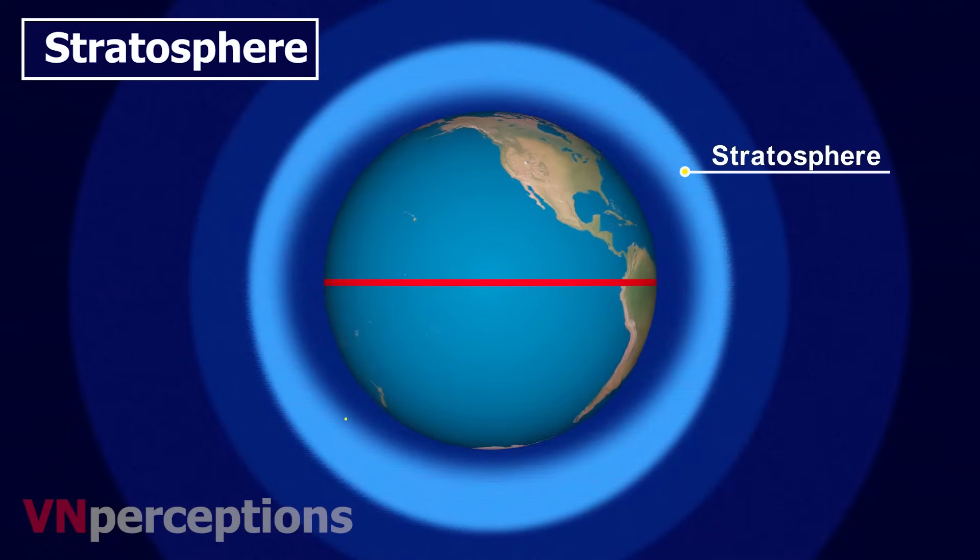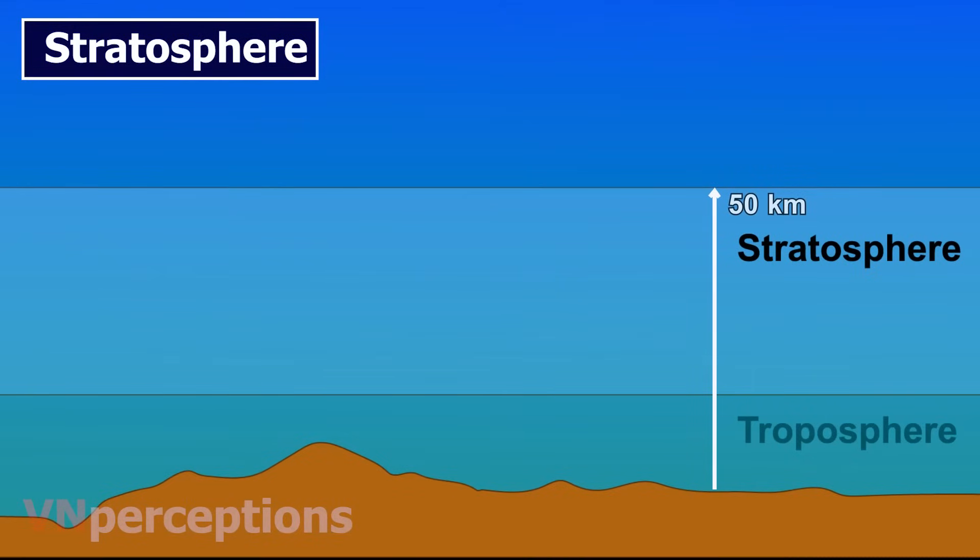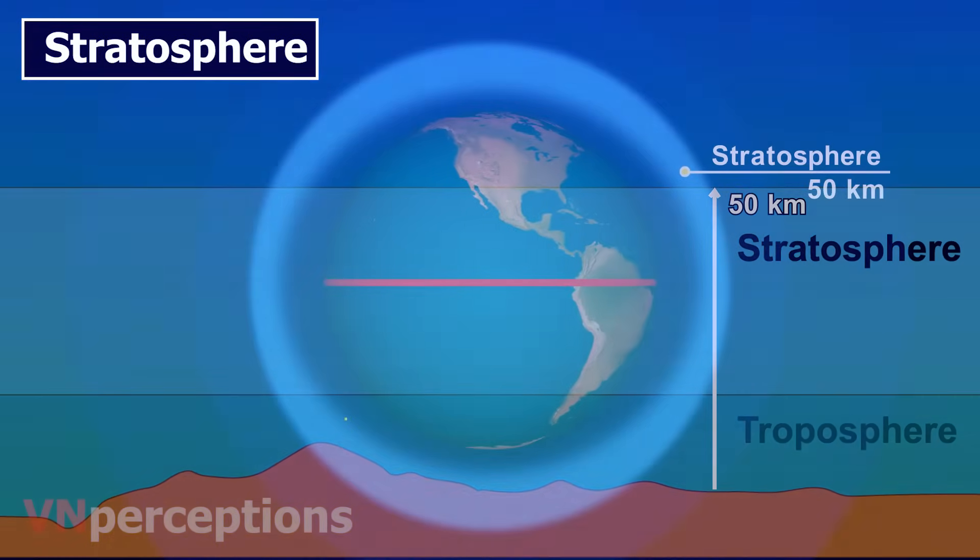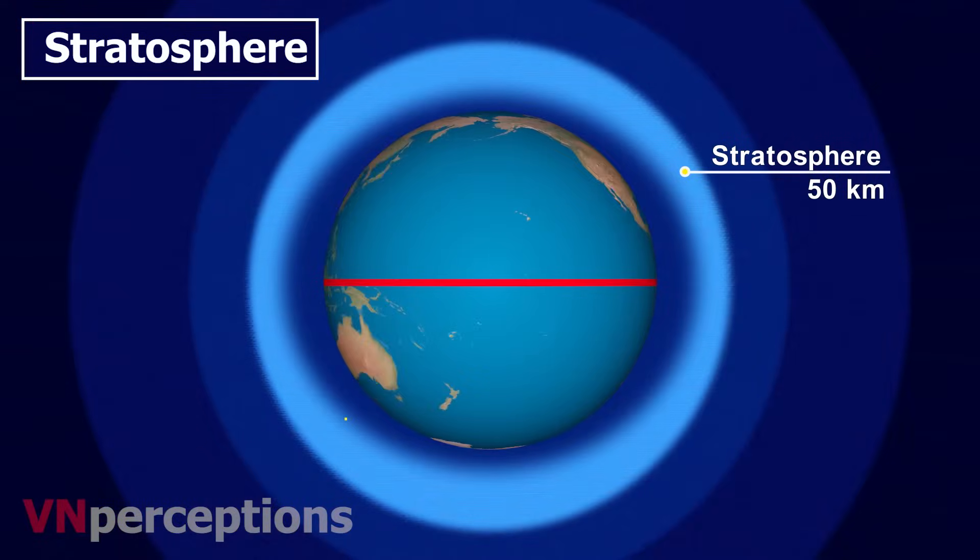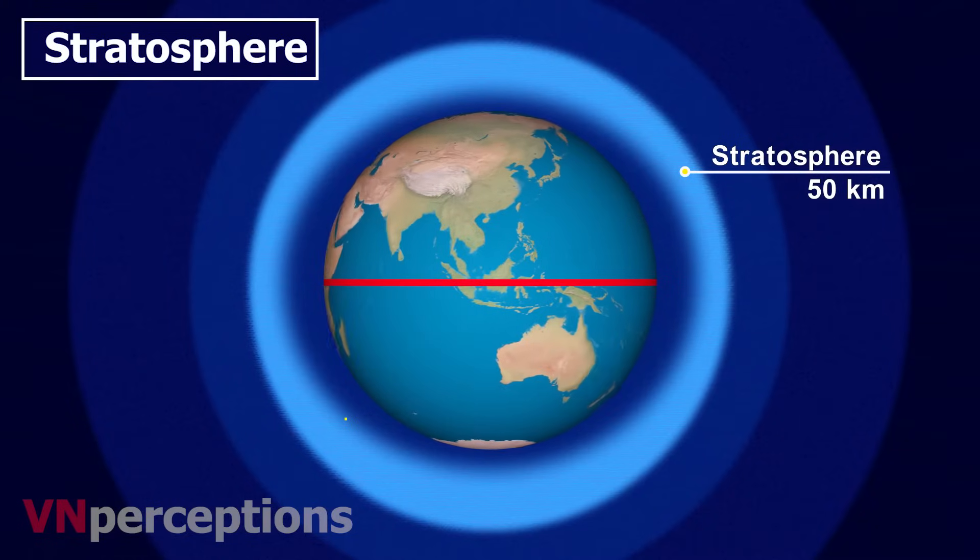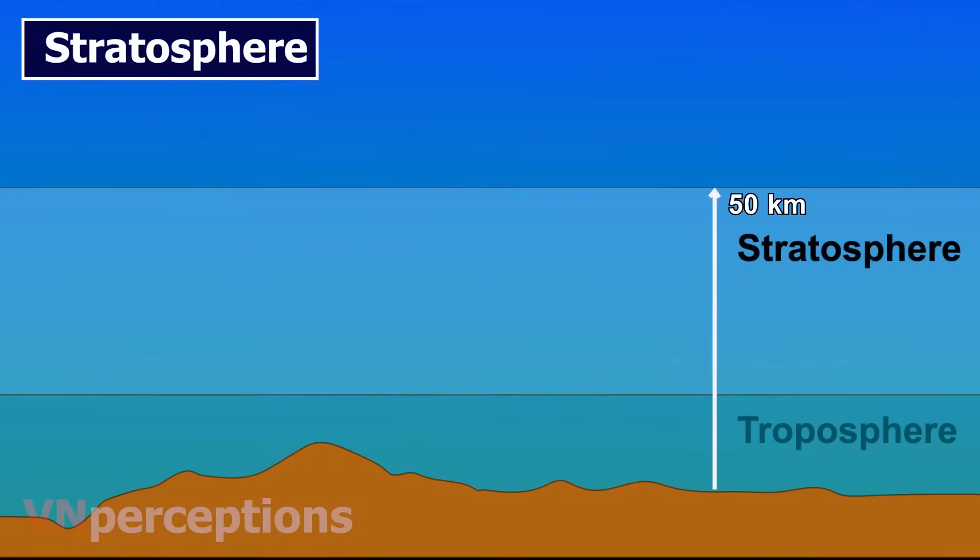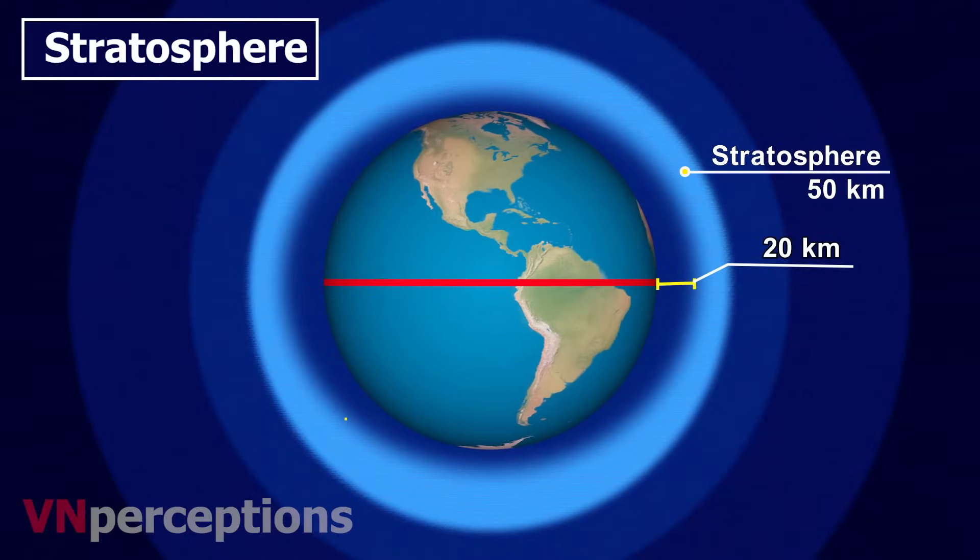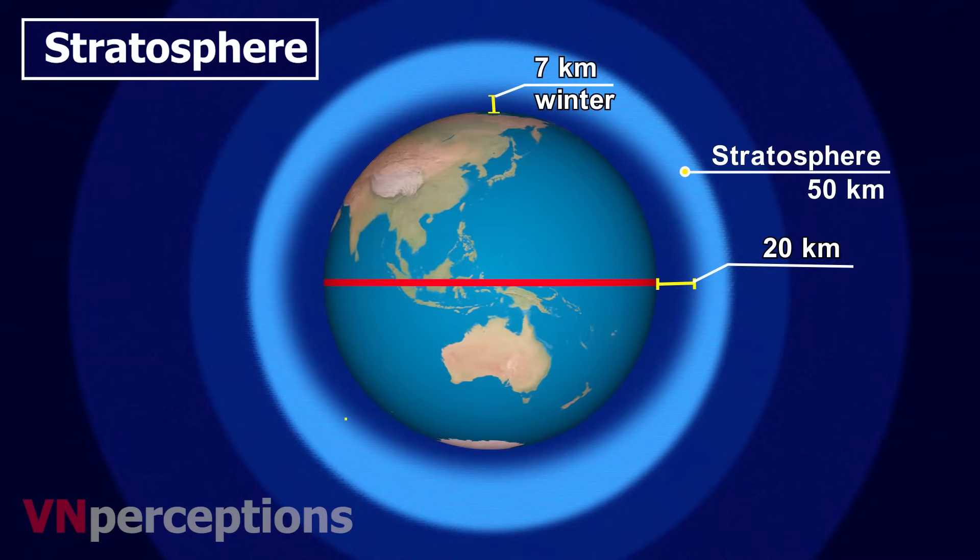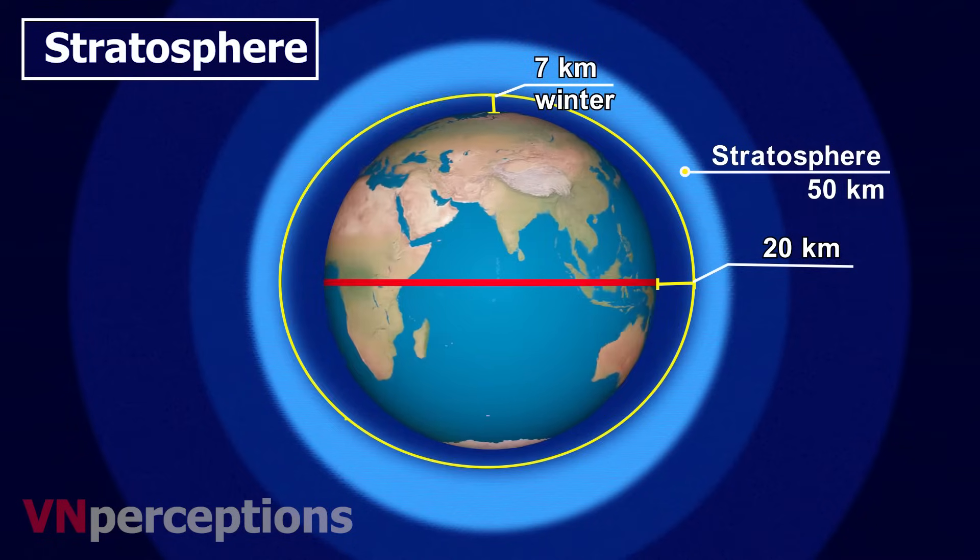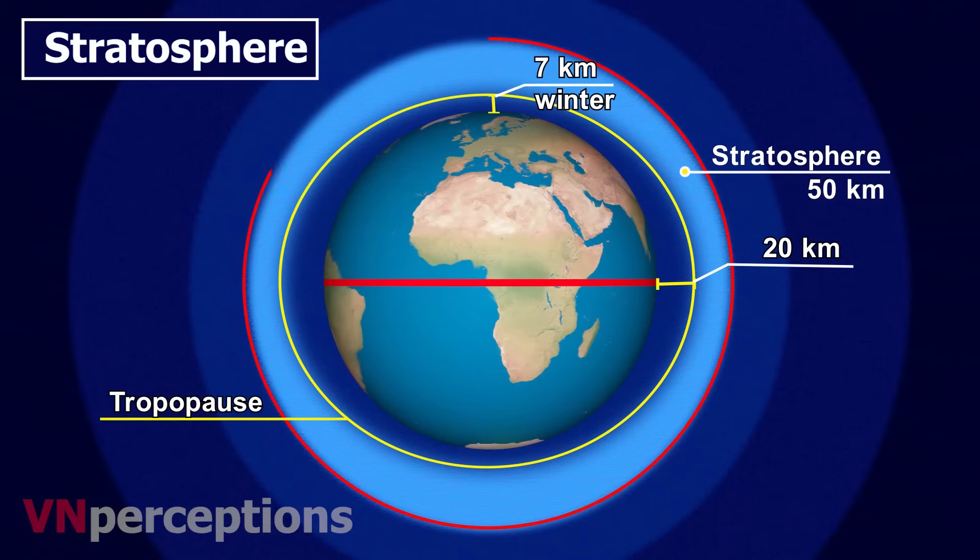Then comes the stratosphere. The stratosphere is found above the tropopause and extends up to a height of 50 kilometers. The bottom of the stratosphere is around 10 kilometers above the ground at mid-latitude. The height of the bottom of the stratosphere varies with latitude and with the seasons. The lower boundary of the stratosphere can be as high as 20 kilometers near the equator and as low as 7 kilometers at the poles in winter. The lower boundary is called the tropopause, the upper boundary is called stratopause.